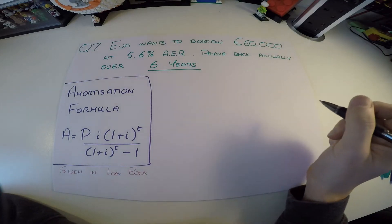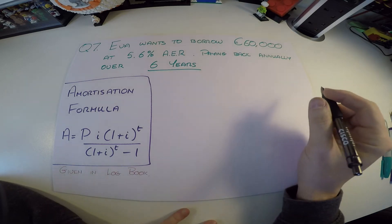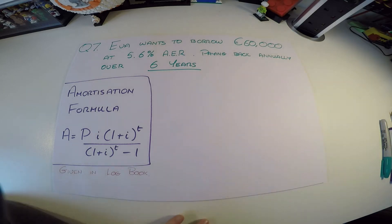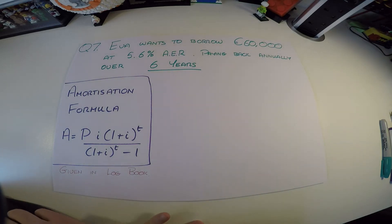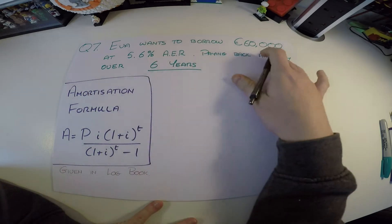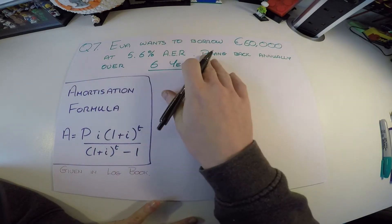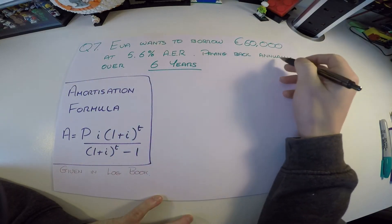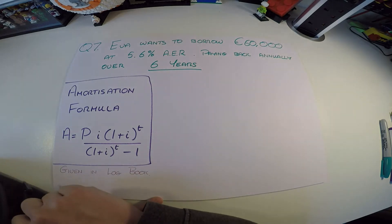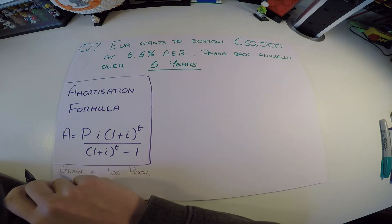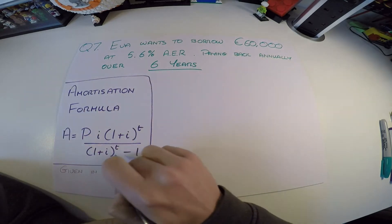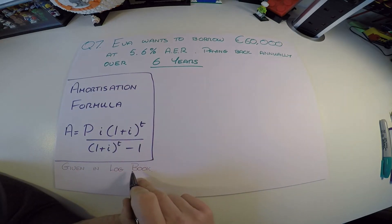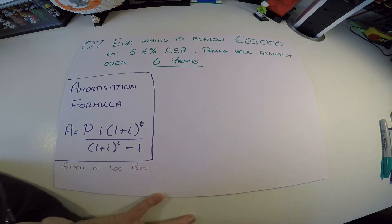This is question 7 from DEB's 2020 mock papers — some financial maths. Part A is very straightforward: Eva wants to borrow 60,000 at 5.6% AER, paying back annually over six years. It says to use amortization to calculate her repayment, so we can go straight to the formula. Remember, this formula is given in your logbook.